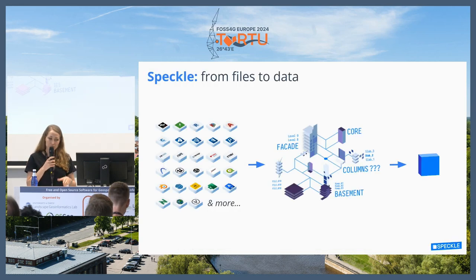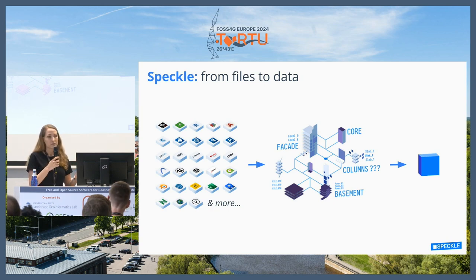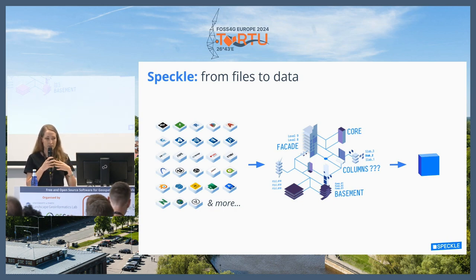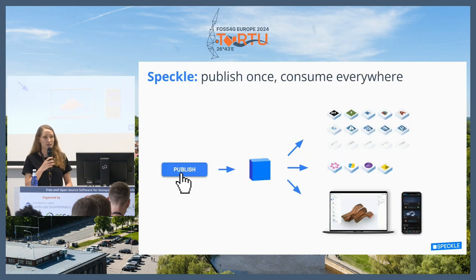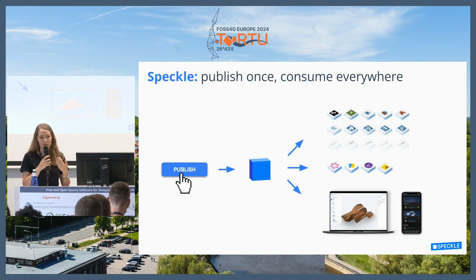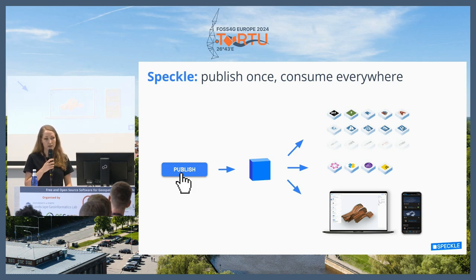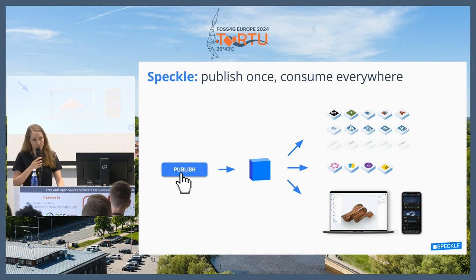The principle of how Speckle works on the back end is taking the data from the host software — whether it's architecture, engineering, Microsoft Excel, or any other app — converting it into a very simple open format resembling JSON, and uploading it to the cloud. Once you publish it, you can access it in any other host software. You can pull it back there, pull it to your Python script and run publishing dashboards, or access it through the web app. You can also access the versioning system of all the models, basically following the GitHub principle but for 3D models.